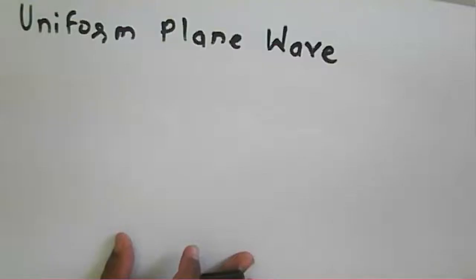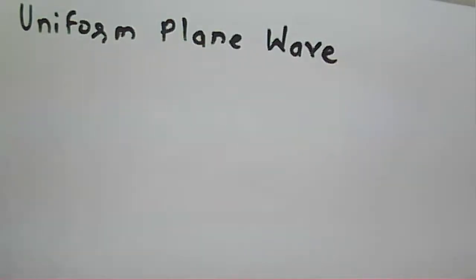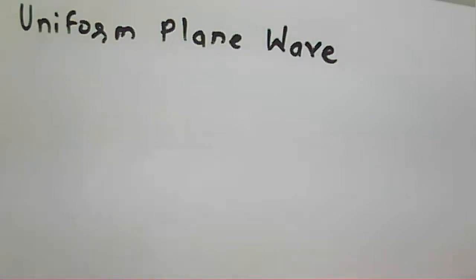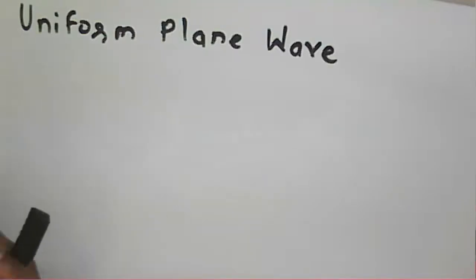Welcome to the microwave engineering course. Today we will see the concept of a uniform plane wave. A microwave is a small wave. We will look at how a wave propagates in space and how the same wave propagates in a waveguide, which is a transmission line. We will see some basics of the wave first, then proceed to how radiation takes place from an antenna.